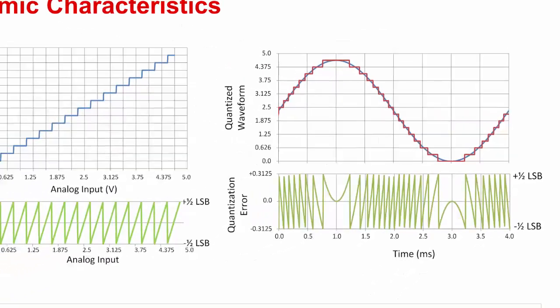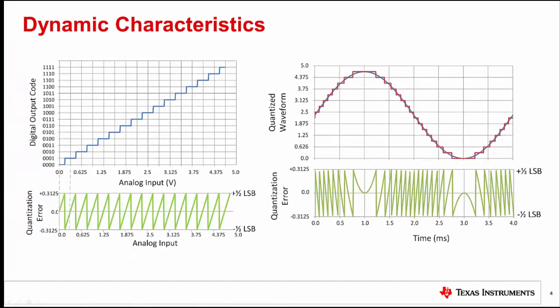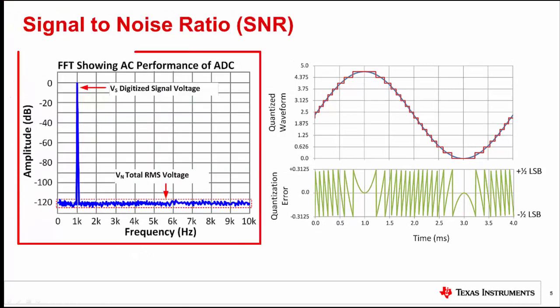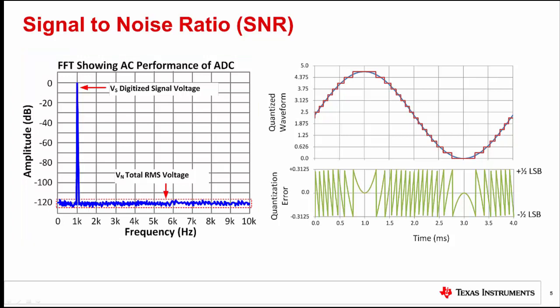Let's look at the frequency domain relationship for this waveform. On the left-hand side, you can see the frequency domain representation for the digitized sine wave. The digitized signal applied is at 1 kHz, and the noise is the quantization noise from the rounding error on the waveform.